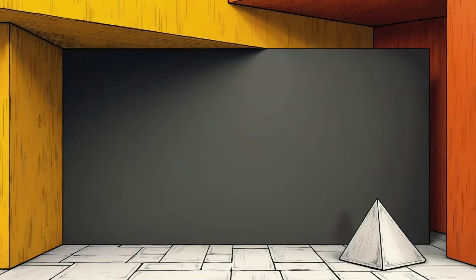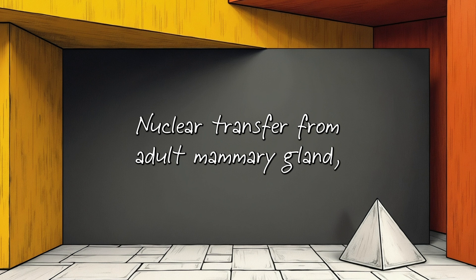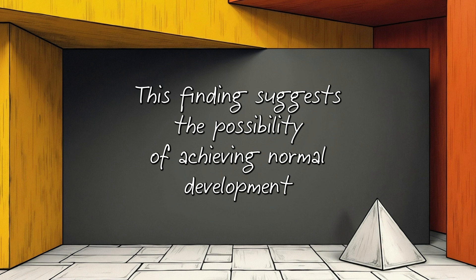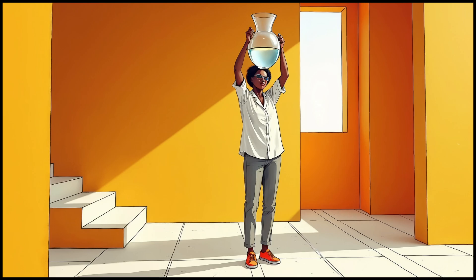And here's an inverted pyramid revision: 'Nuclear transfer from adult mammary gland, fetal, and embryonic cells has resulted in the birth of live lambs, confirming that cellular differentiation does not involve irreversible genetic modification. This finding suggests the possibility of achieving normal development from a wide range of differentiated cells by inducing donor cell quiescence.' In the revised example, the key achievement and its broader implications appear immediately, offering clarity and context up front.